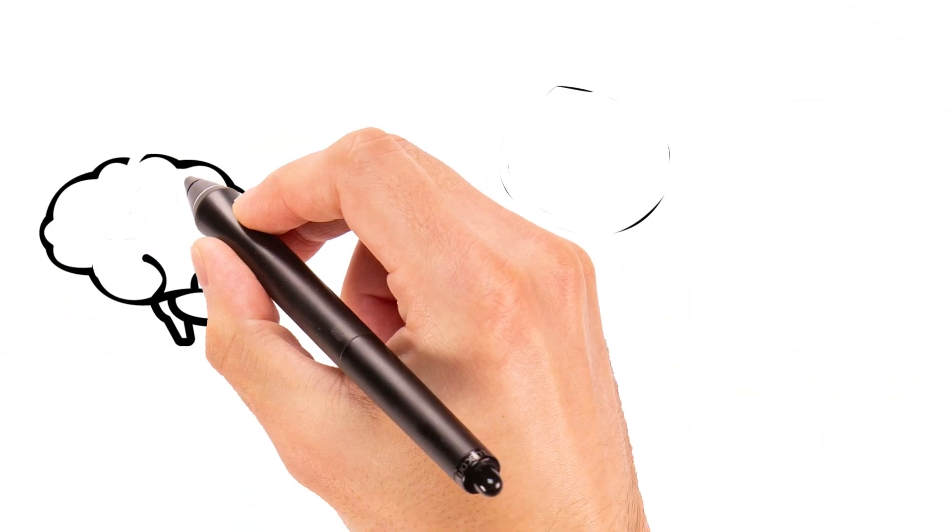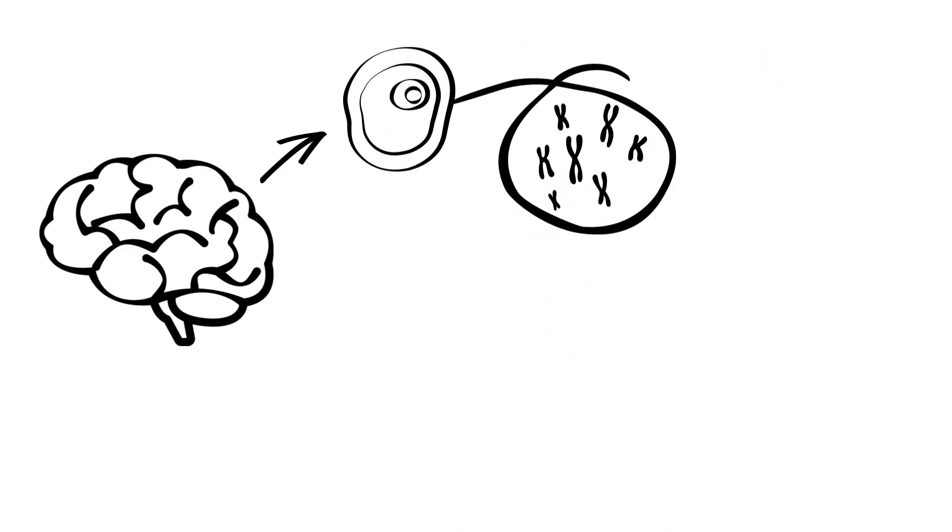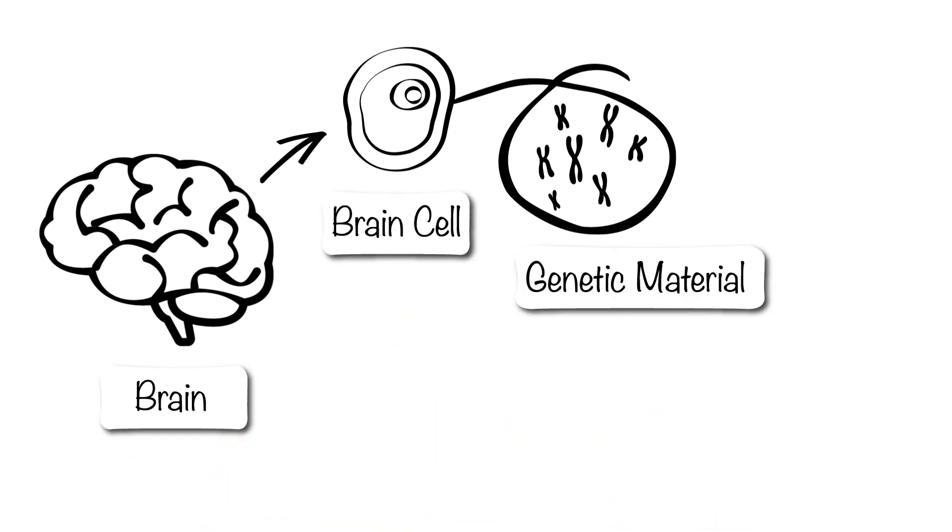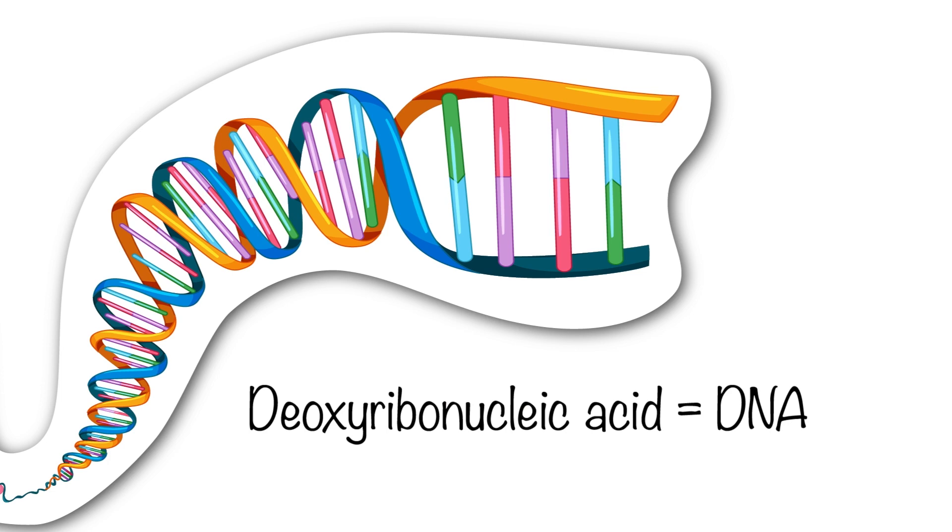Genes are like the instruction manual for our bodies. Genes determine a lot about how we grow and develop and how our brains work. They are the material in our cells that we get from both our biological parents. Our genes are made up of DNA, or deoxyribonucleic acid.